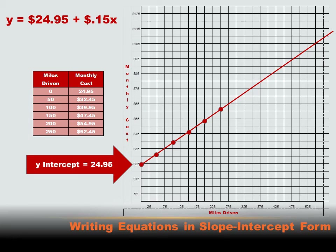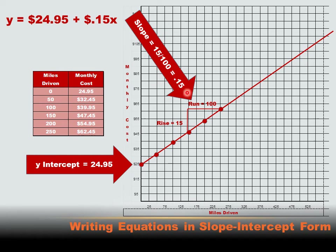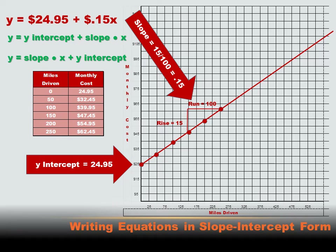Where does 0.15 come from? It's the slope of the line. You remember how we calculate slope: rise divided by run — how much it goes up the y-axis divided by how much it runs across the x-axis. In this case the rise was 15, the run was 100, and 15 divided by 100 is 0.15. So our formula is y equals the y-intercept plus the slope times x, or more commonly written: y equals the slope times x plus the y-intercept.